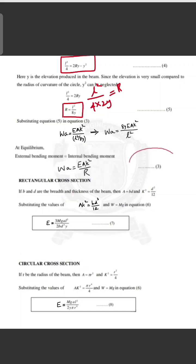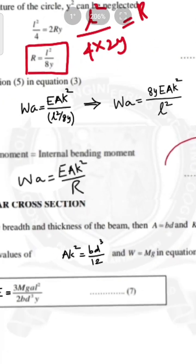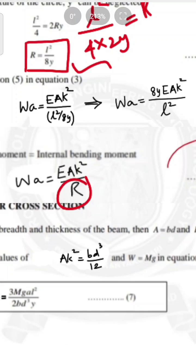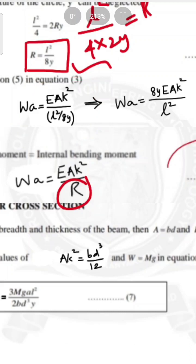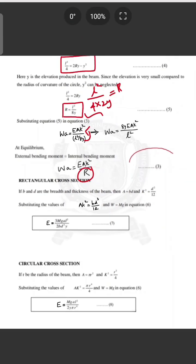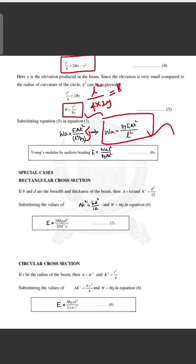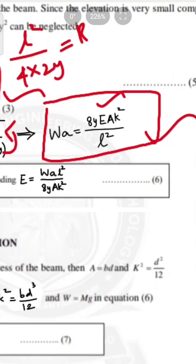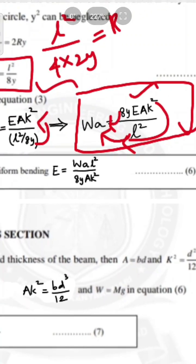From equilibrium: W·a = EAk²/R. Substituting R = L²/8y into this equation gives W·a = EAk² × 8y / L². Rearranging for Young's modulus: E = W·a·L² / (8y·Ak²). This is equation 6, the expression for Young's modulus by uniform bending.